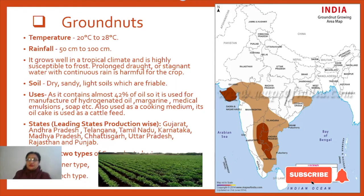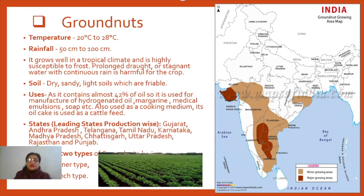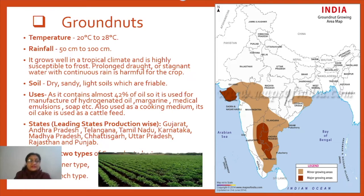Groundnut is basically grown in areas where the temperature range is almost between 20 to 28 degrees, maximum 30 degrees. Groundnut is grown in areas where rainfall is comparatively less — it should not go very high. The rainfall should be less and the soil should be light so that water received by rainfall seeps down easily and does not remain on the surface. The ideal rainfall range is 50 centimeters to 100 centimeters.